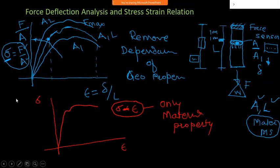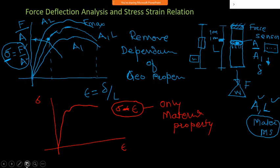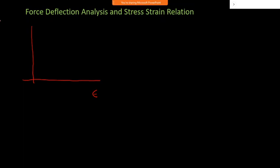The process is: first measure the deformation, then convert the force-deflection curve into a stress-strain curve. When examining the stress-strain curve, the stress axis and strain axis together give us a single curve showing the material's behavior.